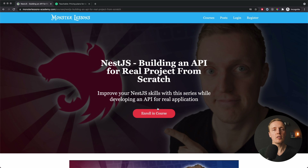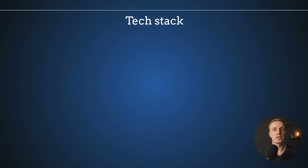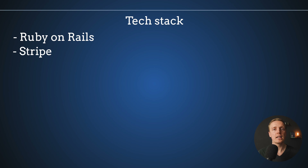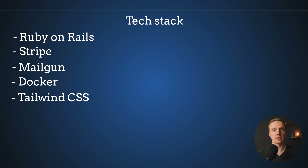All pages here are simply rendered with Rails, and I use just a little bit of JavaScript to implement comments and an HTML5 player. The full list of technologies I use is: Ruby on Rails, Stripe for payments, Mailgun for sending emails, and Docker to pack everything inside a container.